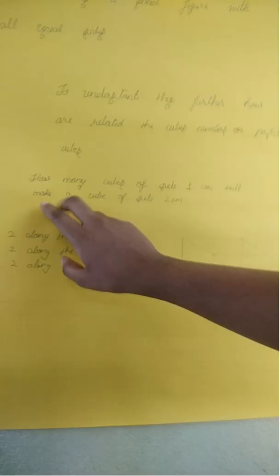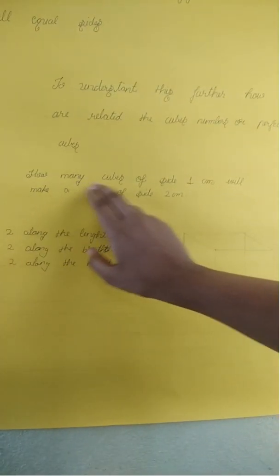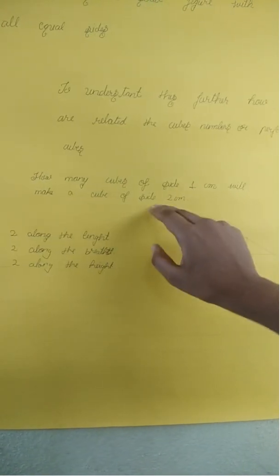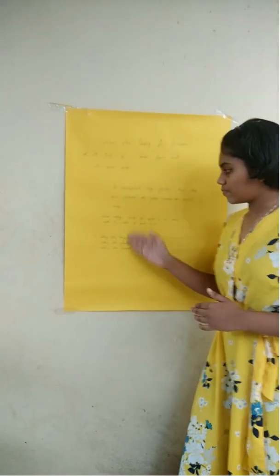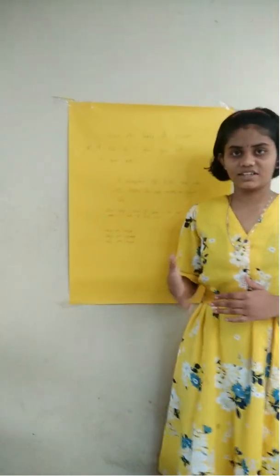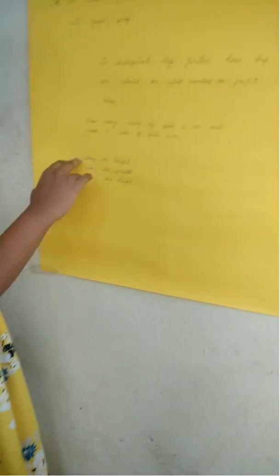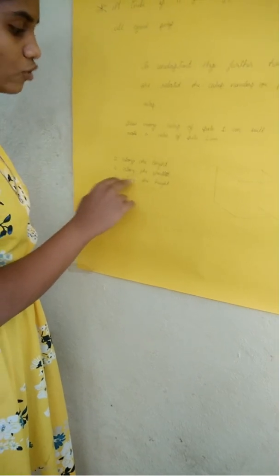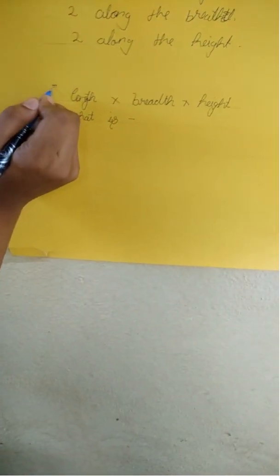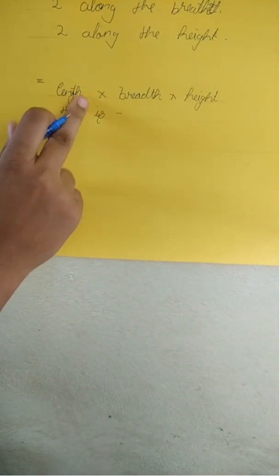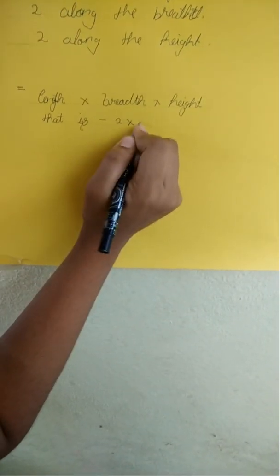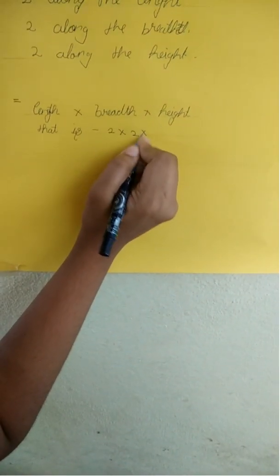How many cubes of size 1 cm will make a cube of size 2 cm? We count it basically by using multiplication. We measure this cube: 2 along the length, 2 along the breadth, and 2 along the height — that is length into breadth into height, which is 2 into 2 into 2.